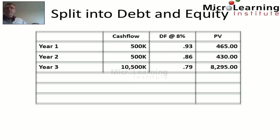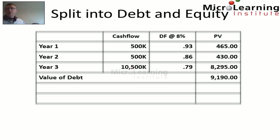At the end of year 3 we pay another $500k plus the bond could be redeemed in full at par, which would be an additional $10 million. So the total potential cash to be paid at the end of year 3 is $10.5 million. We are told that the discount factor at 8% after year 3 is 0.79, giving a present value of $8.295 million. Therefore the overall present value of future cash flows — the value of the debt at inception — is $9.19 million.